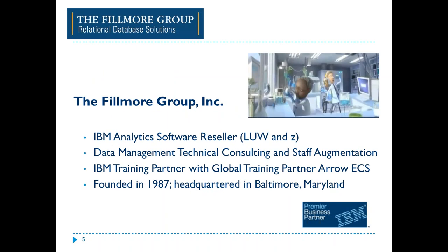The Fillmore Group is a 30-year IBM business partner founded in 1987, headquartered in Baltimore, Maryland. We focus on IBM analytics software across all platforms including Linux, Unix, Windows, and System Z. We provide data management, technical consulting, and staff augmentation. We are a training partner with Arrow ECS, which means we offer one-stop shopping for implementation services, software acquisition, and the critical skills training needed to implement your IBM analytics solution.